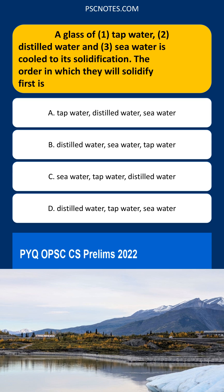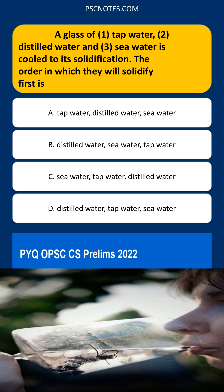Key point: The freezing point of a solvent is lowered by the presence of dissolved solutes. This phenomenon is known as freezing point depression, a colligative property dependent on the concentration of solute particles. Distilled water is the purest, having a freezing point closest to 0 degrees Celsius.